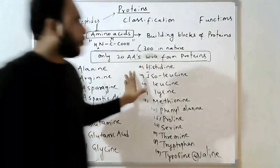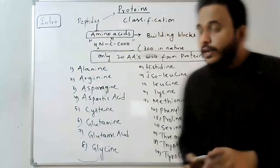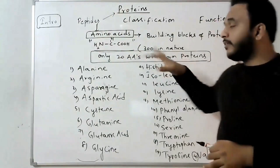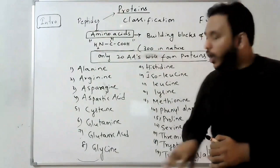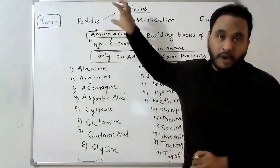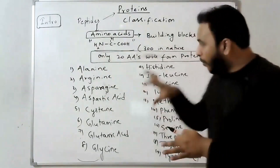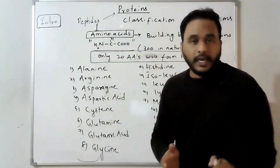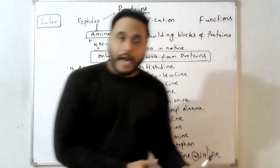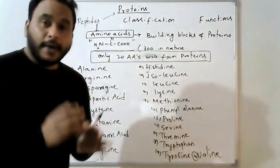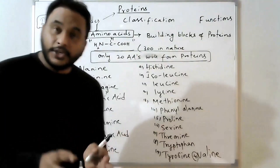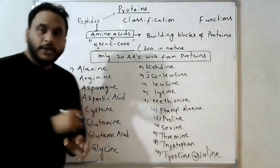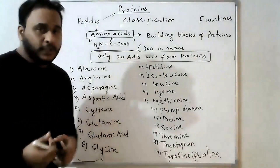Totally these 20 amino acids are the ones that finally form proteins. Among the 300 amino acids present in nature, only these 20 form proteins. And among these 20 amino acids, only 10 are called essential amino acids.